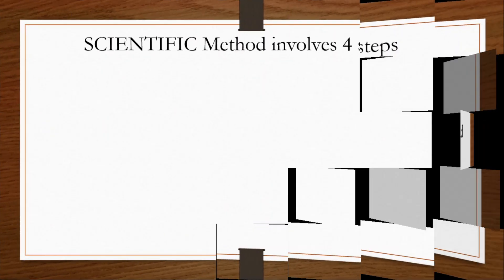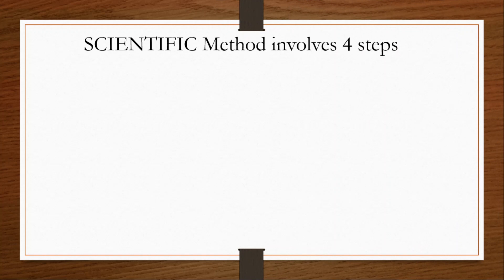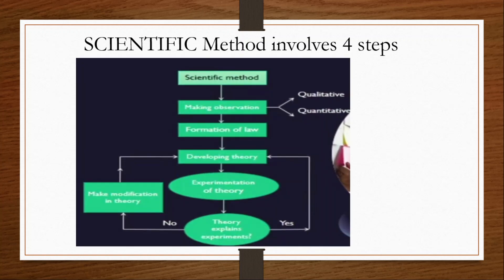The scientific method involves four steps. Which are those four steps? The first step is making observation. Making observation — let us take an example. Newton's laws were not made only by an apple falling from a tree. Newton didn't frame his laws only with that. That was the first observation — the falling of an apple was the first observation.